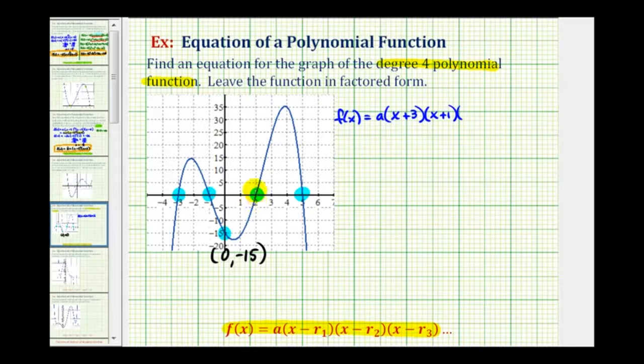Next, if we have a zero of positive two, we must have a factor of x minus two. And if we have a zero of positive five, we must have a factor of x minus five.